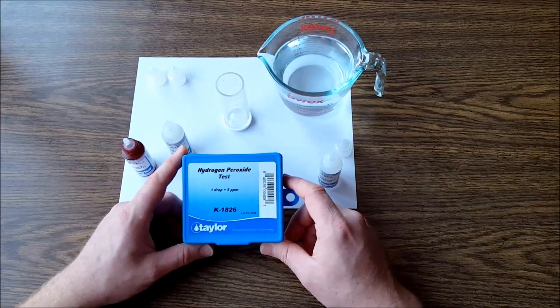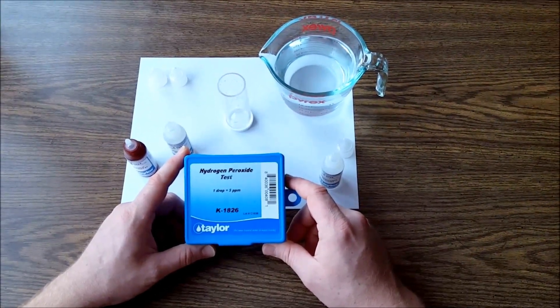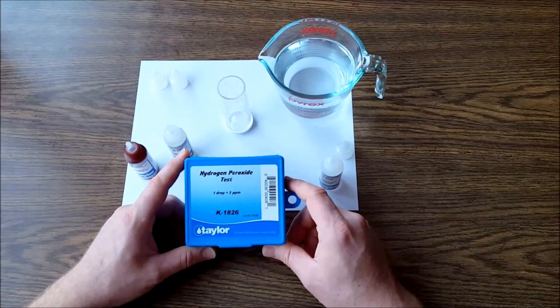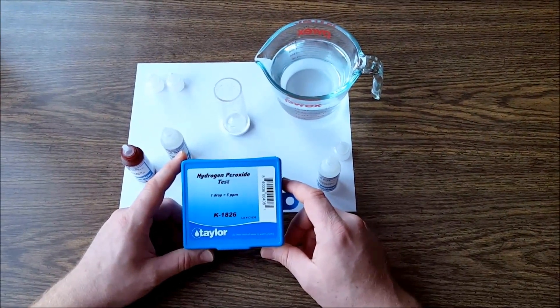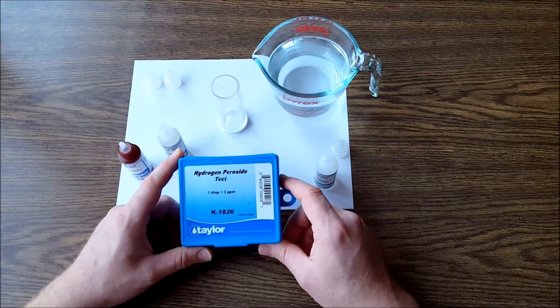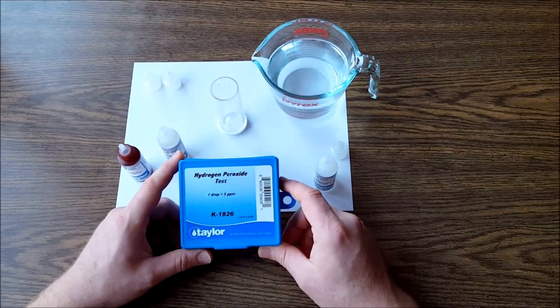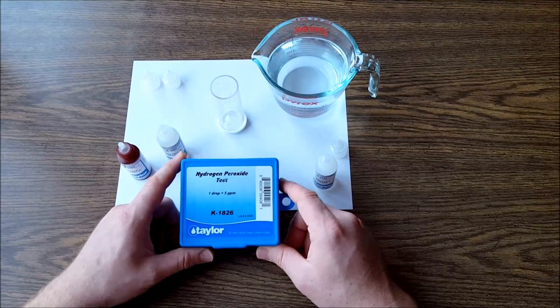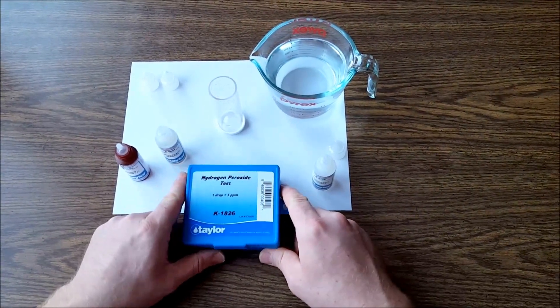There's two versions: there's the k1826 which is the 0.75 ounce, and then there's the k1825 which is the two ounce version. The difference is the k1826 will give you 44 results and the k1825 will give you 118 test results. And it's fairly simple.